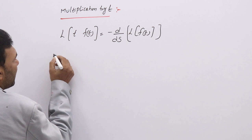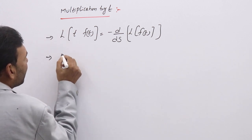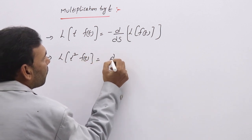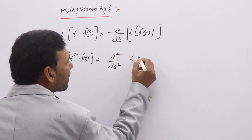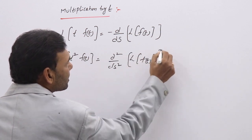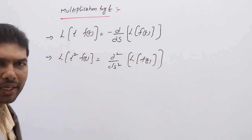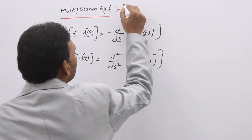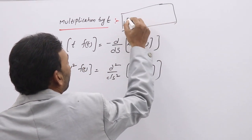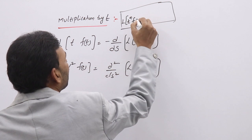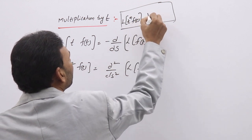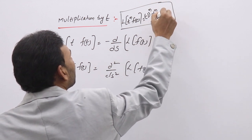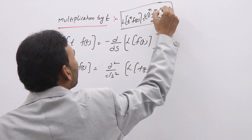When two t's are in product — that means t² is in product — you have d²/ds² times L{f(t)}. Similarly, for t³ in product, you do d³/ds³. The fundamental formula is: L{t^n · f(t)} = (-1)^n · d^n/ds^n [L{f(t)}].